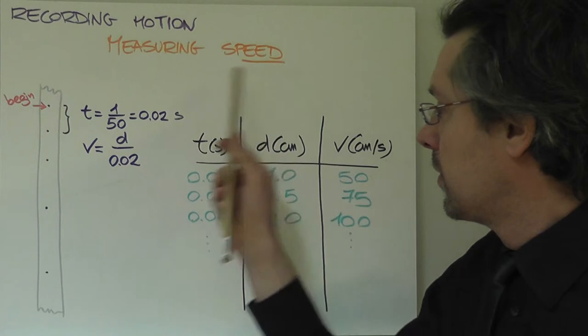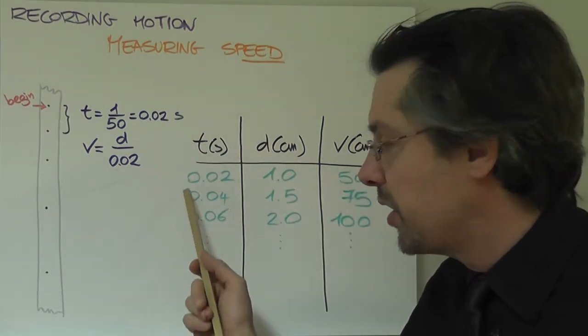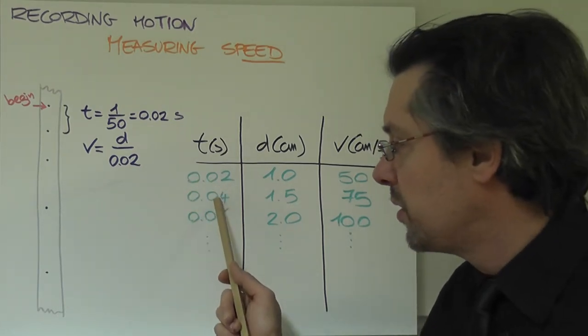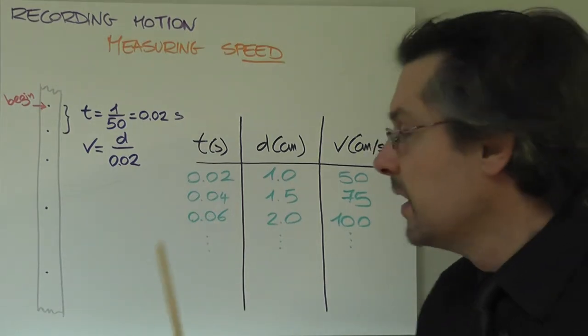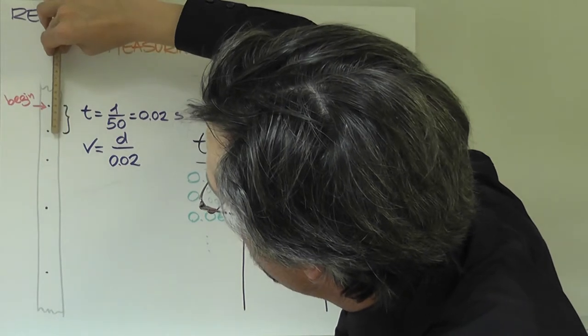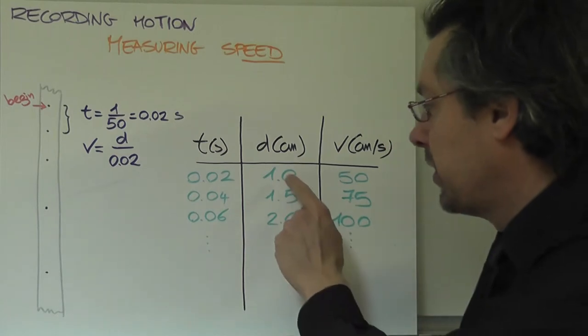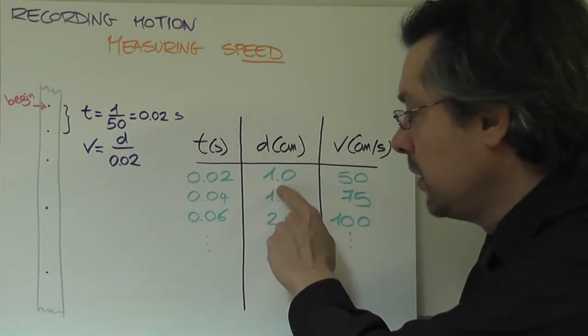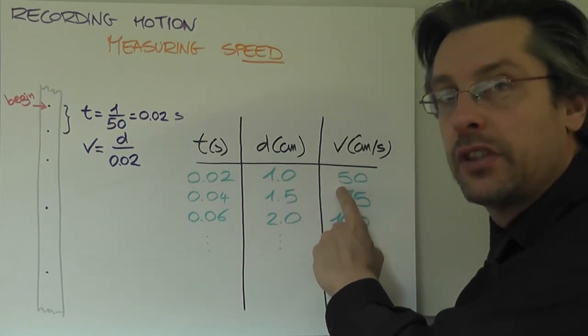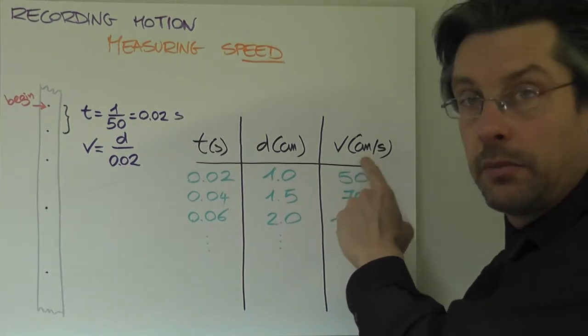So you prepare a table like the following. You know that the time will always increase by 0.02, so you go 0.02, 0.04, 0.06, and let's imagine that I go here with my ruler and it turns out that the first two dots are spaced apart by one centimeter. I write it here, I do my math and it turns out that the speed recorded in that first interval is 50 centimeters per second, mind the unit.